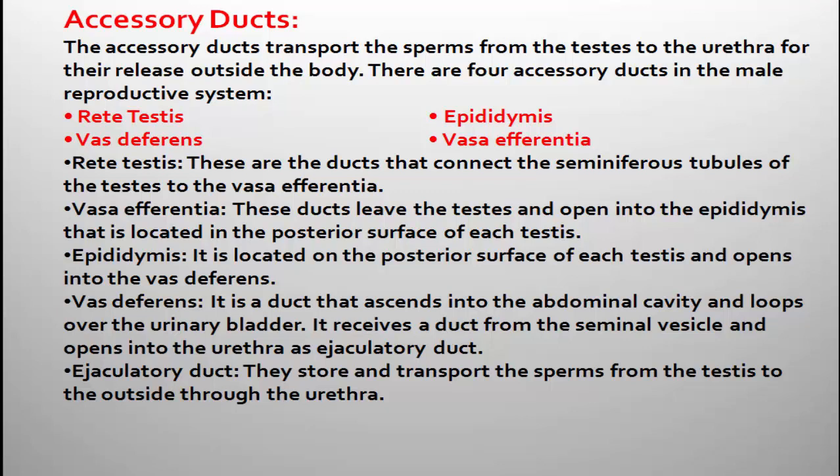Among all the accessory ducts, the epididymis is a highly coiled structure. It is located along the posterior surface of each testis — covering the entire length of the testis — and finally it opens into the vas deferens.